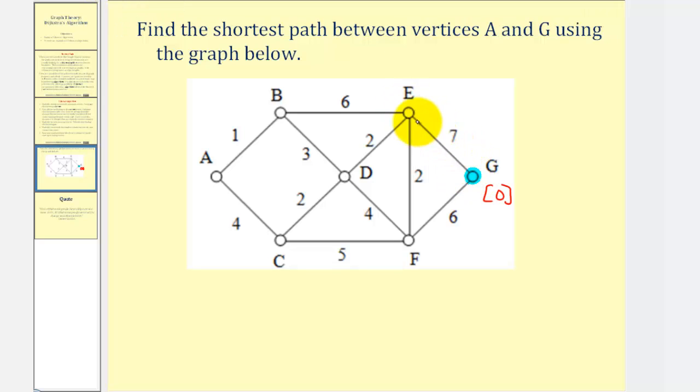We'll notice E would be seven units from G, so we'll label E with a seven. And notice that F is six units from G, so we'll label F with a six. So now we can mark G as visited. And because six is less than seven, vertex F is now current.